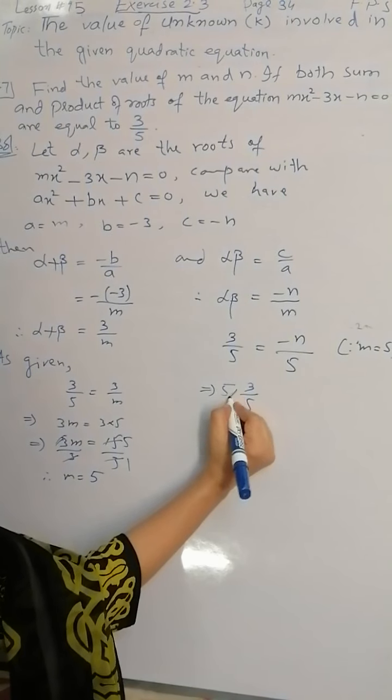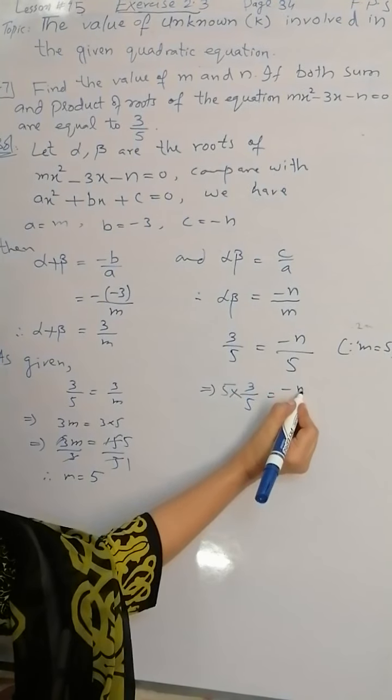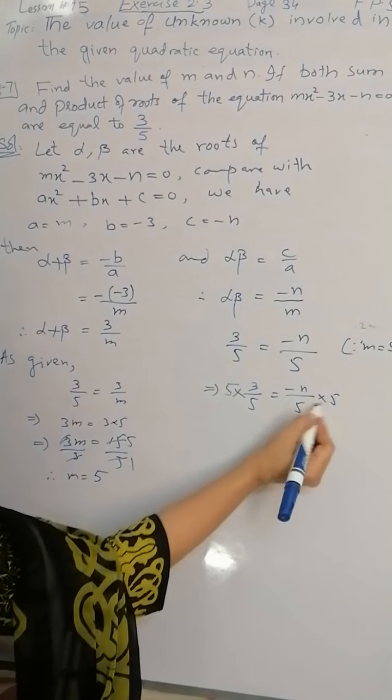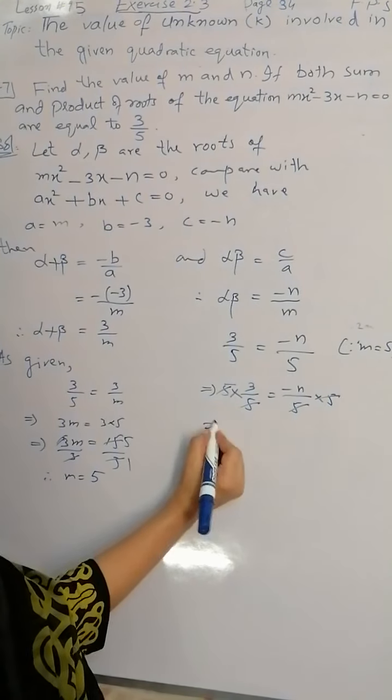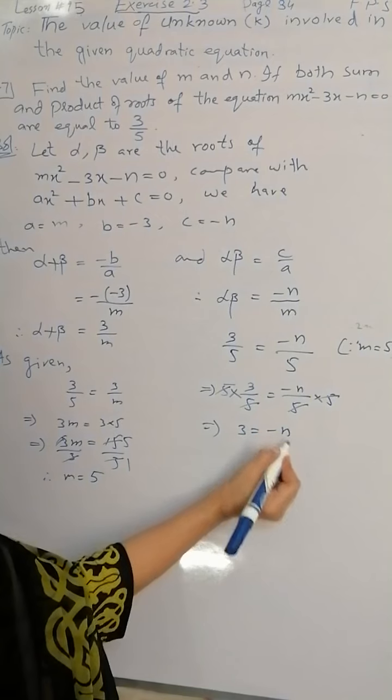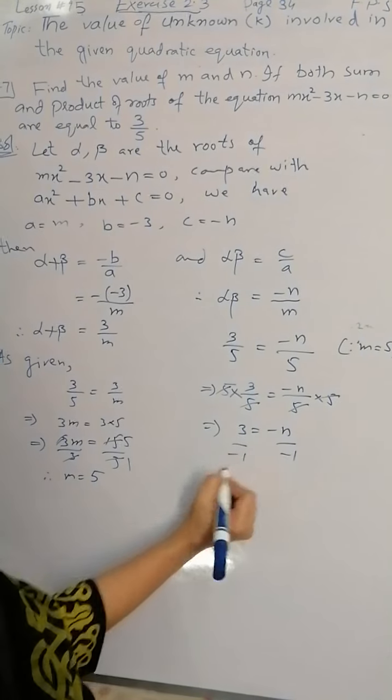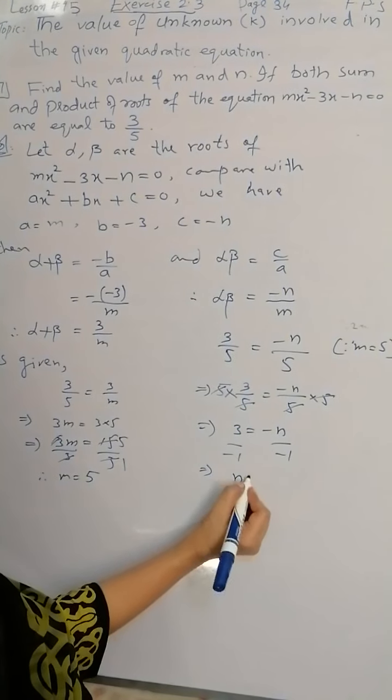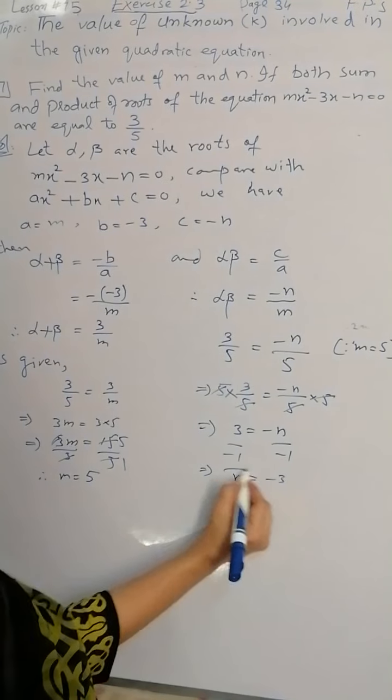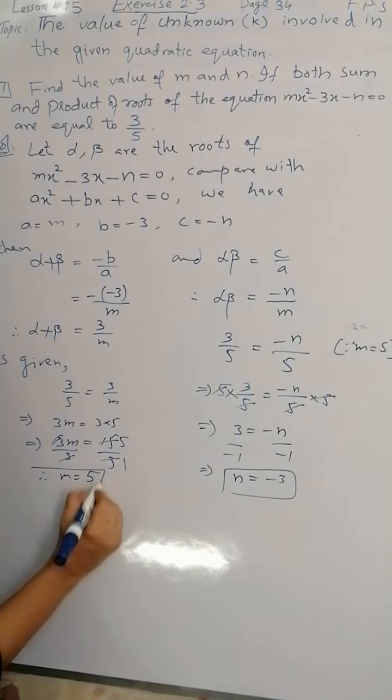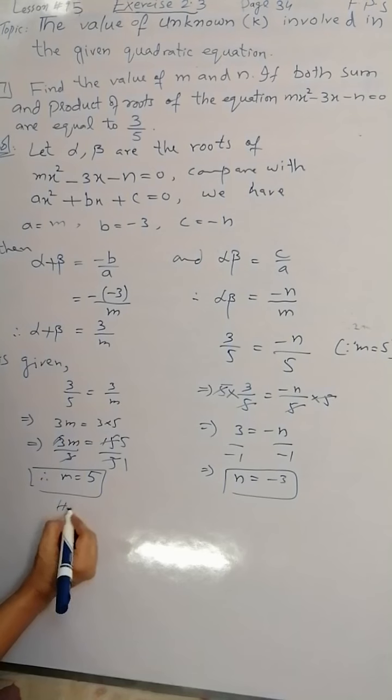The value of n: by multiplying 5 on both sides we get 3 = -n. Dividing -1 on both sides we get the value of n which is equal to -3. Hence both m and n have the values.